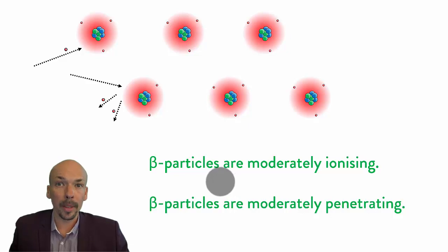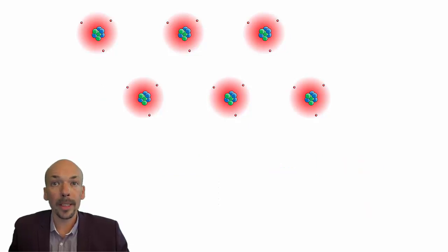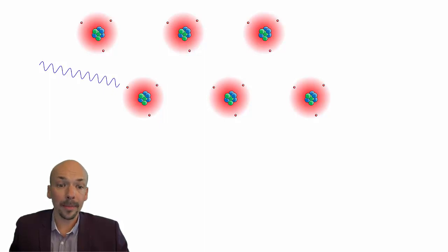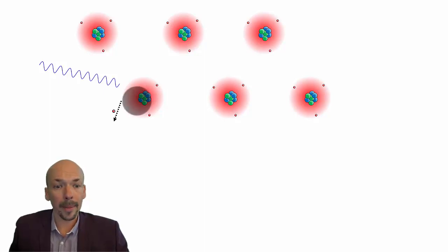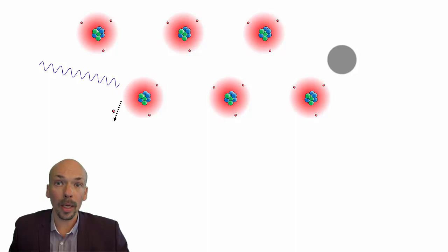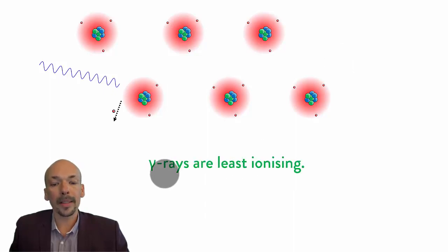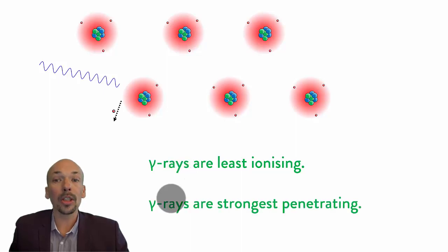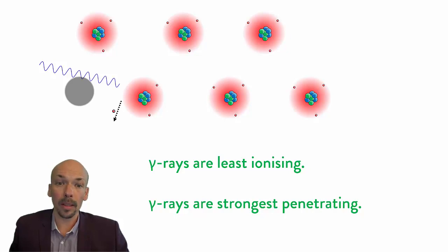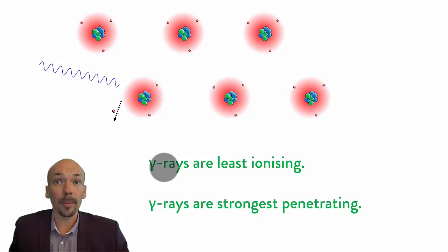Now we will go to gamma rays. Gamma rays don't have any mass — they have just energy. With that energy they can knock off electrons from an atom, but the chances of this happening are really small. Most gamma rays will go right through the material and nothing will happen. Because of that, gamma rays are the least ionizing of the three. But they are the strongest penetrating — they will go right through any material, even walls. So gamma rays are least ionizing but they are strongly penetrating.